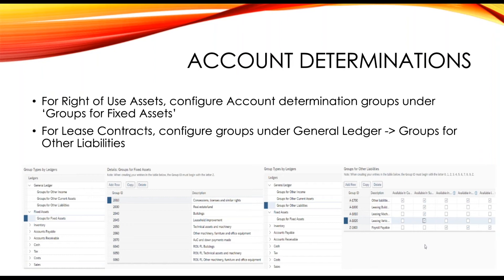For the right of use assets, there's going to be configuring the account determination groups under the groups for fixed assets. These should look familiar. So we've got our groups for fixed assets, and as soon as you scope in the lease accounting, then the 6040, 6050, and 6060 become available. And also on the other liabilities, that's where you're going to be creating one for those long-term liabilities.